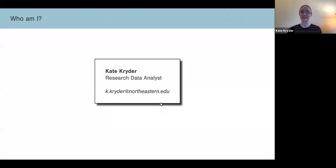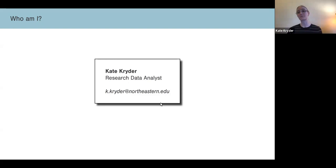Let's talk about who I am. My name is Kate Kreider. My formal title is research data analyst, but what that actually means is I'm the data visualization specialist at the library. I often give workshops like this for topics like Python or using a tool like Tableau. When I'm not giving workshops, you can come into my office and we can meet about different projects you're working on.